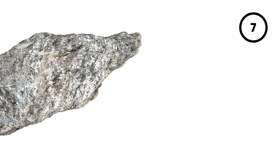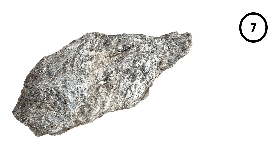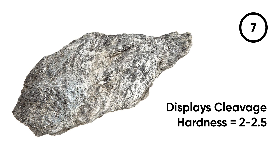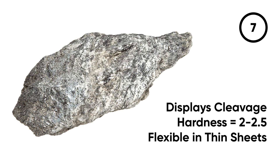Sample seven looks like this. It displays cleavage, has a hardness of 2 to 2.5 on the Mohs scale, and when it breaks apart, it does so as a flexible, thin sheet.